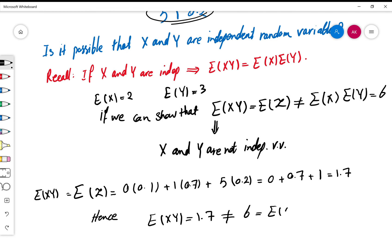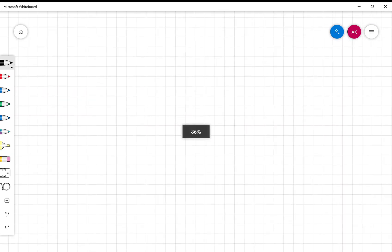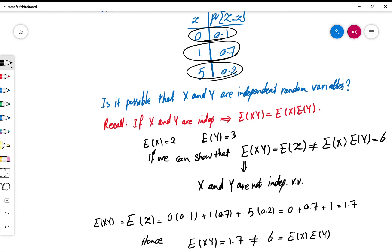Which is E(X) times E(Y). As a result of this computation, we can definitely say that X and Y cannot be independent random variables.